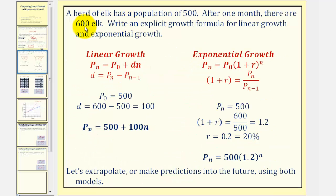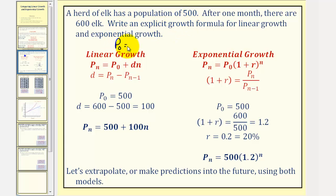As an example, a herd of elk has a population of five hundred. After one month, there are six hundred elk. Write an explicit growth formula for linear growth and exponential growth. We'll use the same information to come up with two equations, one based on linear growth and one based on exponential growth. Since the starting population is five hundred, we can say p sub zero equals five hundred. And if n is the number of months, we can say p sub one, the population after one month, is six hundred. We can use this information to write both equations.